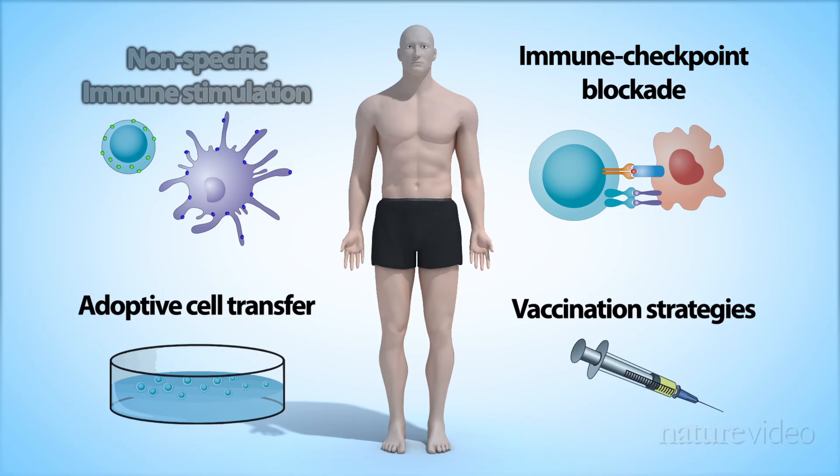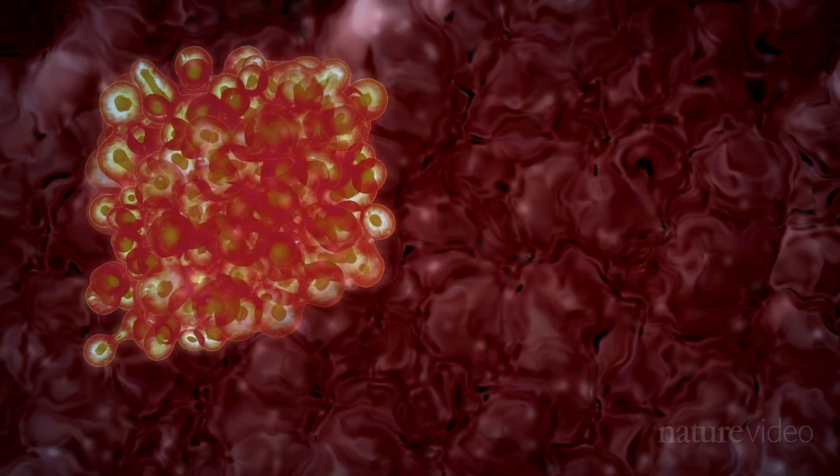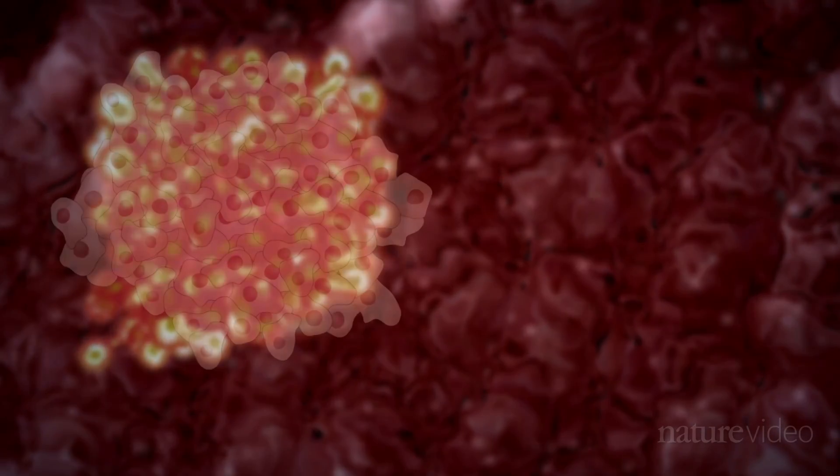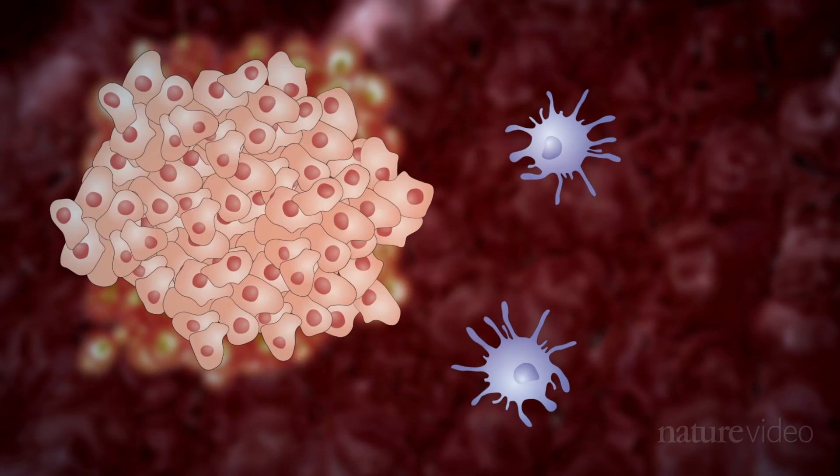The first, non-specific immune stimulation, is used to give a general boost to the immune system in vivo. To do this, some of the many cells that make up the immune system, such as these antigen-presenting cells, need to be activated.